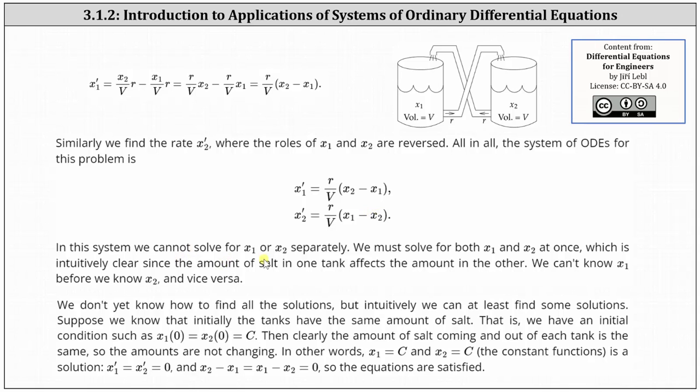In this system, we cannot solve for x1 or x2 separately. We must solve for both x1 and x2 at once because the amount of salt in one tank affects the amount in the other. We can't know x1 before we know x2 and vice versa.